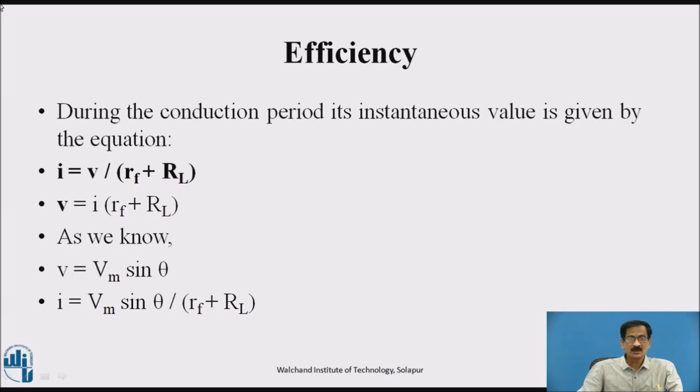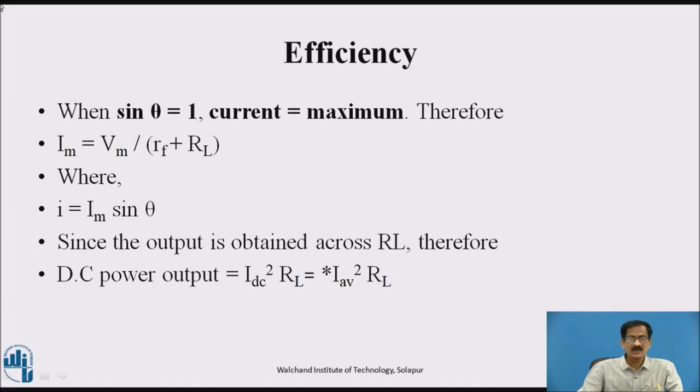During the conduction period, the instantaneous value is given by the equation i equals v divided by RF plus RL. Since v equals Vm sin theta, i will be equal to Vm sin theta divided by RF plus RL. When sin theta equals 1, the current will be maximum. Therefore, im equals Vm divided by RF plus RL, where i equals im sin theta.